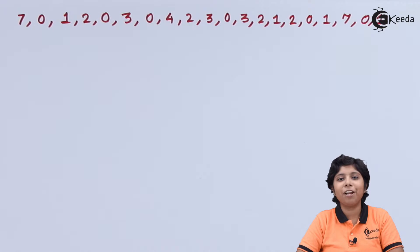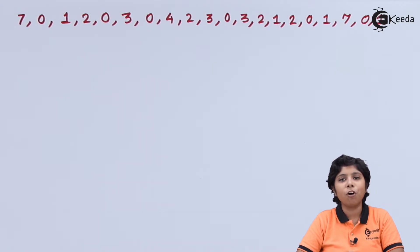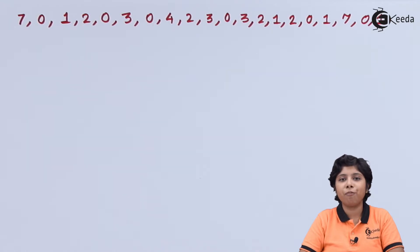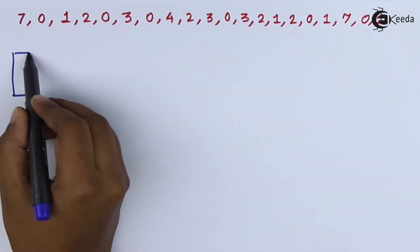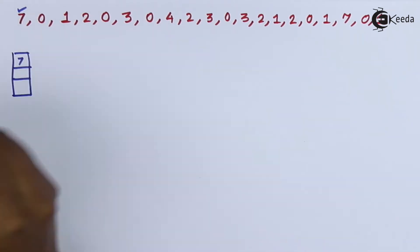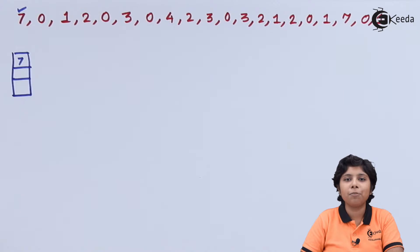Let us consider the same reference string as described in FIFO. The number of page faults for FIFO was 15. Now let us see what happens with the optimal page replacement algorithm. We are also taking three available frames. For the first three pages in this reference string, all will cause a page fault because no pages are available in the frames.